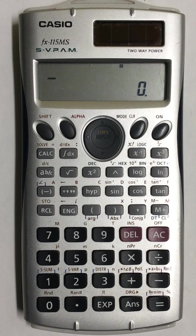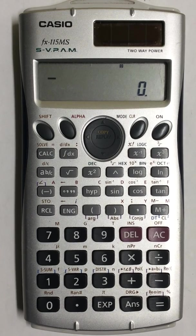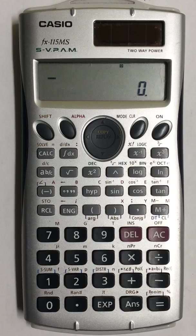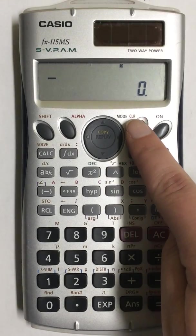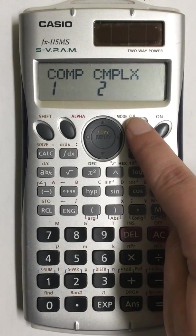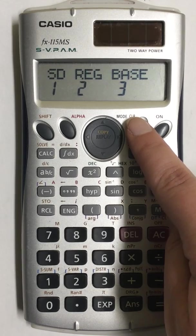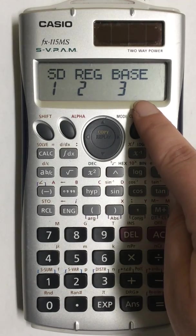To begin, I need to put my calculator into statistics mode. To do that, I'm going to press the mode button twice so these three options come up on the screen.